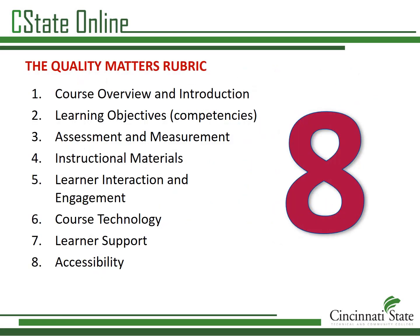A Quality Matters review is done with reference to a rubric of quality standards. The QM rubric is divided into eight general standards. You will only be scoring standard one and parts of standards two, three, four, five, and six. The subject matter expert portion of the rubric is included in the packet you have been sent.